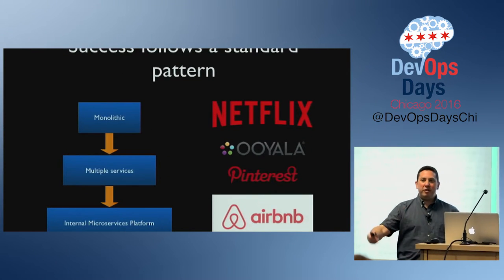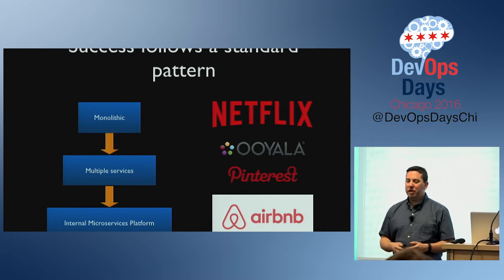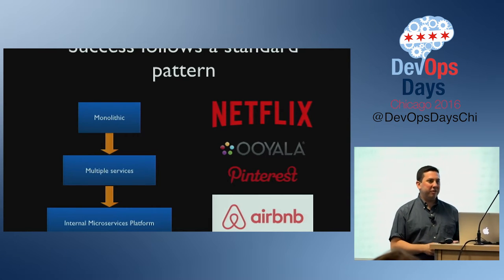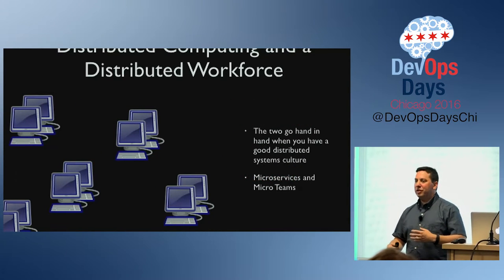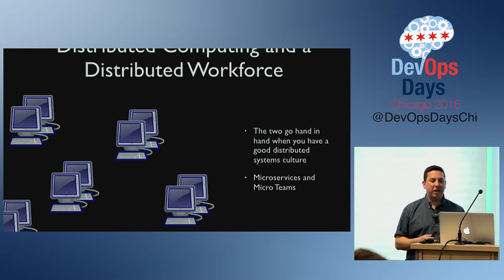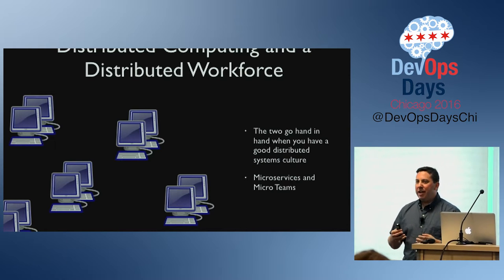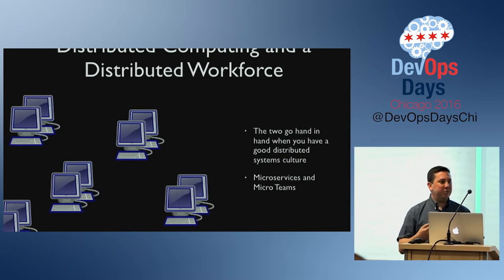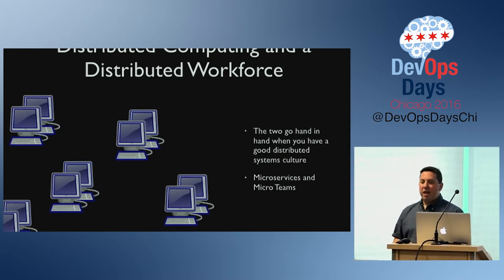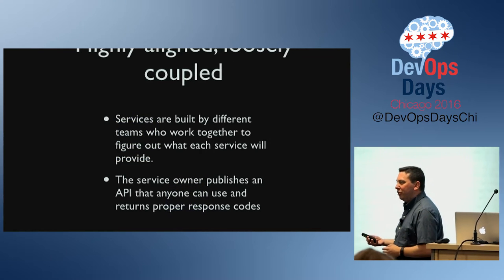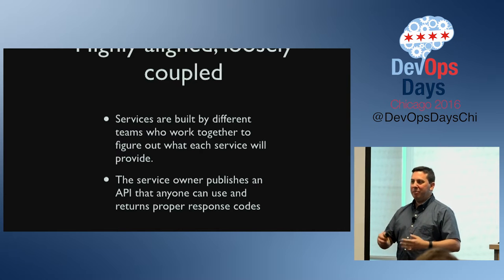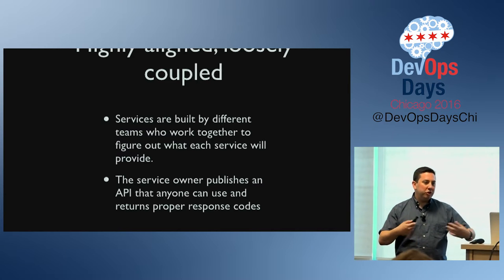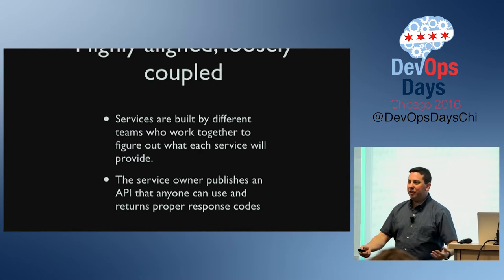The standard microservices pattern — everybody kind of moves through this eventually. There are still some monoliths out there, but there are a lot of advantages to microservices. There's the distributed workforce and the contracts or APIs between them, and everything is loosely coupled. You don't have to have everybody on the same page. That's the joy and the pain of serverless.